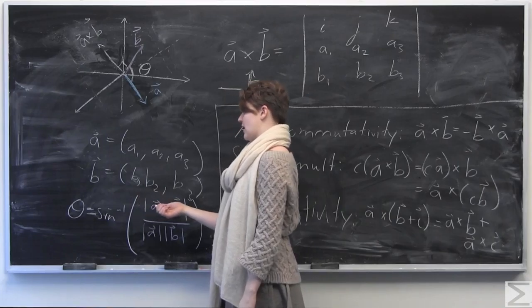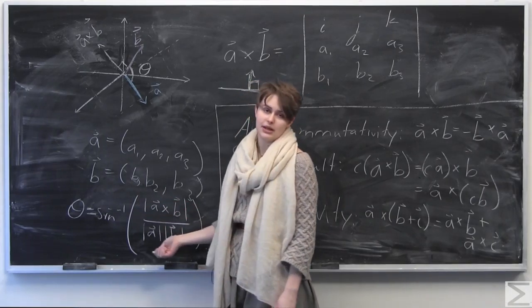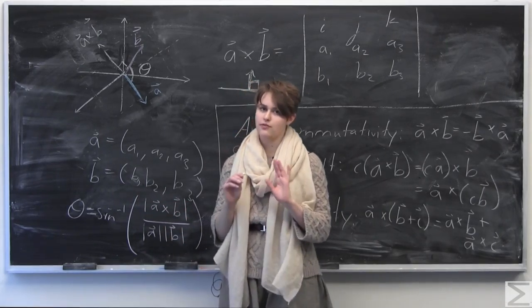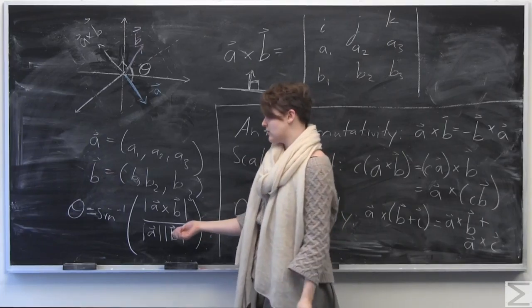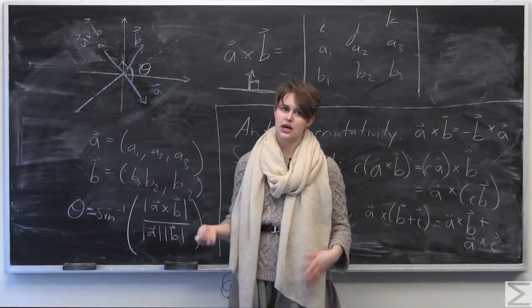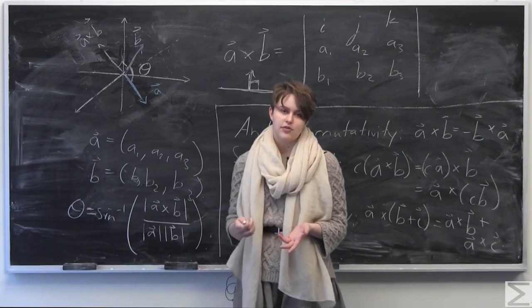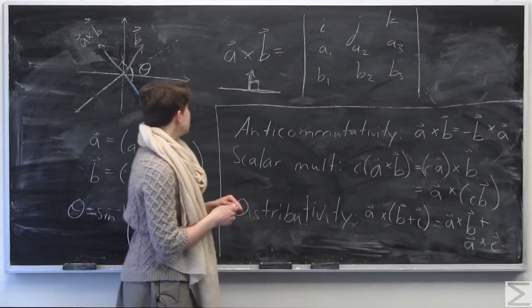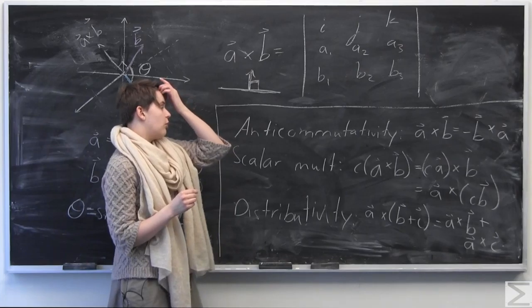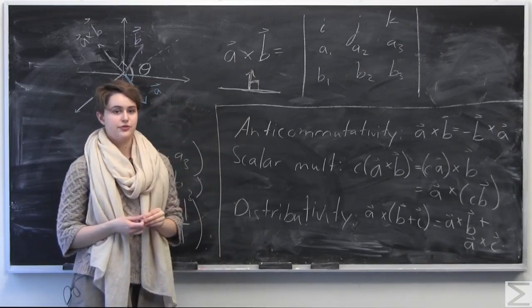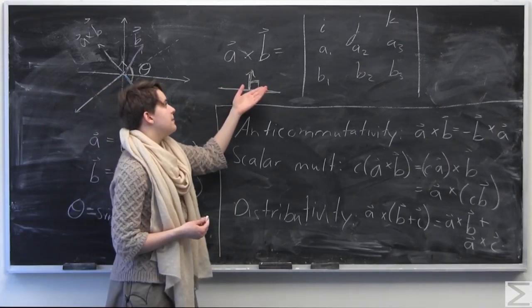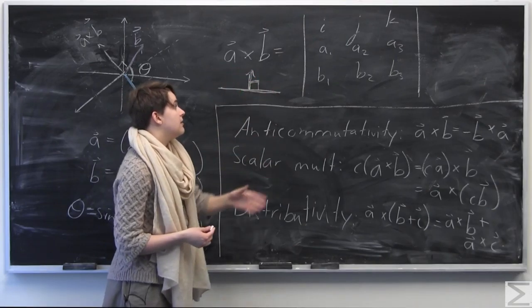So you can use this formula, theta is equal to sine inverse of all this business here, but it's much, much easier to just use a dot product formula, which is just the same thing here. You'd have theta is equal to the arc cosine of A dot B over magnitude of A times magnitude of B. It's much more advisable to use that formula over this formula because finding the cross product, as we'll see, is kind of a hassle. It takes much more time than finding the dot product does.